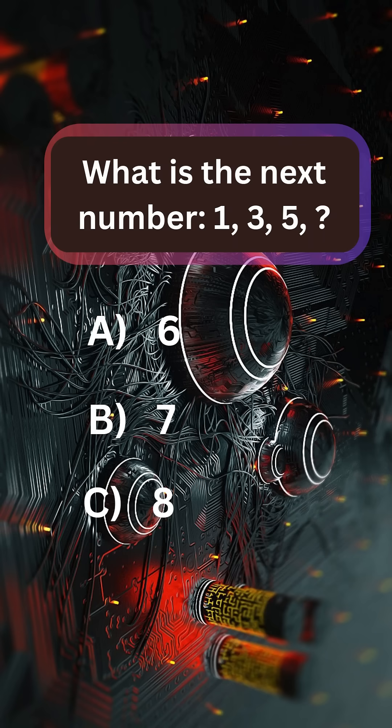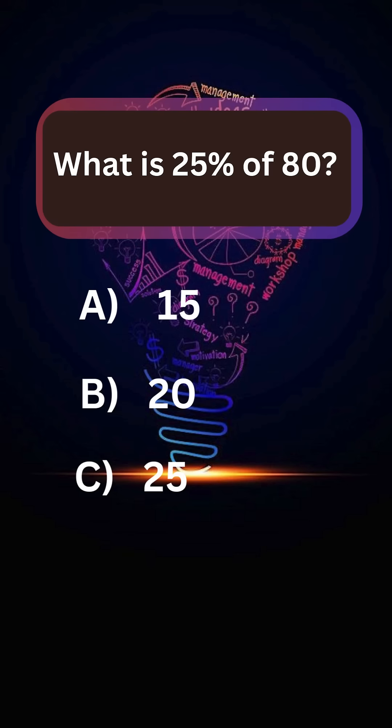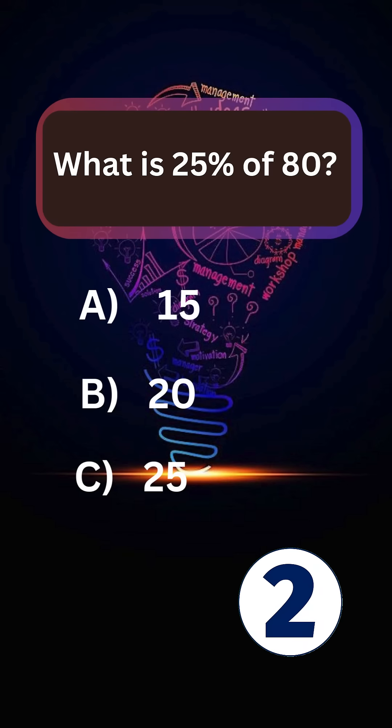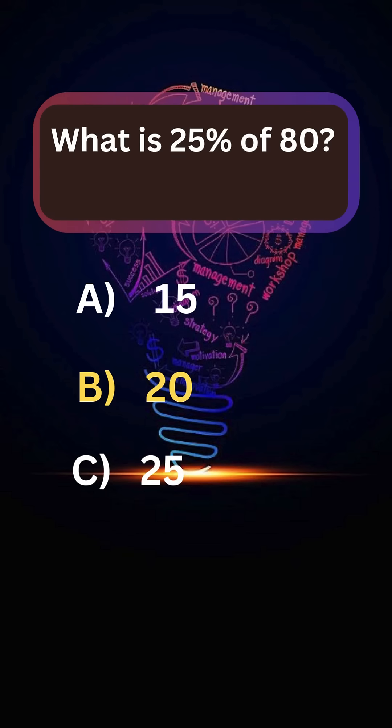What is the next number? 1, 3, 5. Answer: 7. What is 25% of 80? Answer: 20.